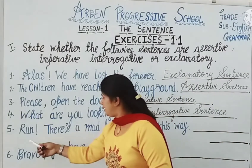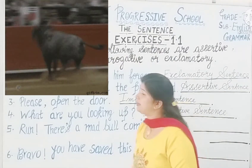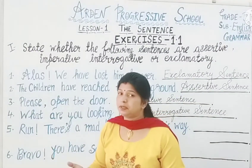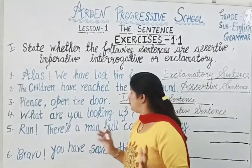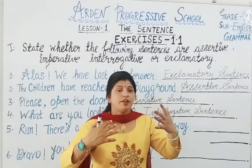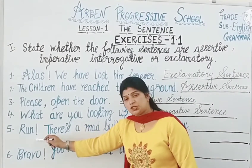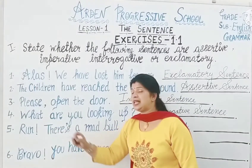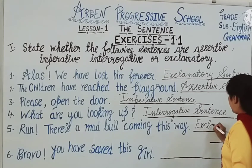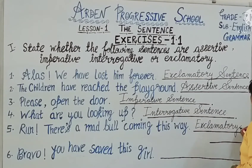Fifth one: Run! There is a mad bull coming this way. In this, the person is saying 'run' — the bull is coming on your way. You can also see that one exclamation mark is there. So this exclamation mark tells us that this statement is an exclamatory sentence.